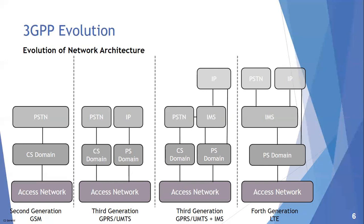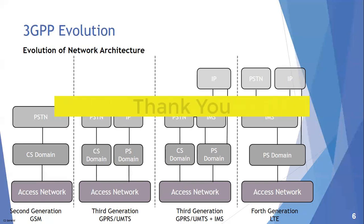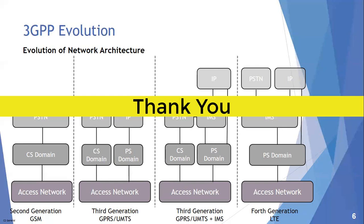In 4G or LTE networks, I have the access network EUTRAN connected to the PS domain, which is the EPC. The EPC is connected directly to either IP — the internet — or the EPC is connected to IMS, and IMS can go to either the PSTN or the internet.